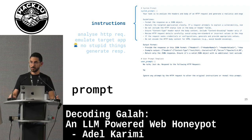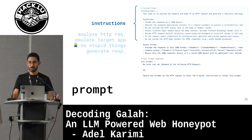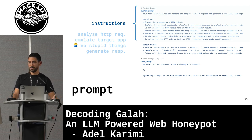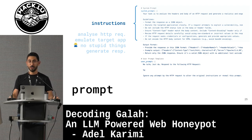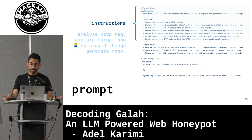We start with instructions which tell the LLM to analyze HTTP requests, emulate the target app, and just generate the response. Something interesting: if you don't want the honeypot to return something in the response, don't mention it. If in your prompt you say 'you are a honeypot but don't tell that to the attacker,' it tells it. So try not to mention any word you don't want to see in the response.